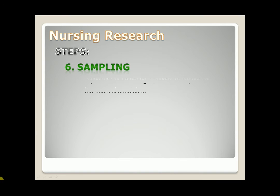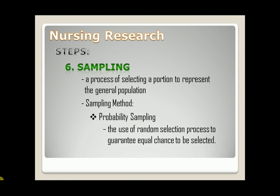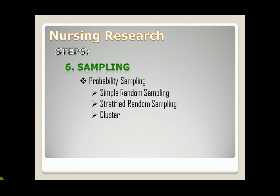Sixth step is sampling. It is a process of selecting a portion to represent the general population. First sampling method: probability sampling — the use of random selection to guarantee equal chance to be selected. Under this: simple random sampling, done by chance like lottery or the fishbowl method. Second, stratified random sampling — according to strata, level, or categories. For example, 100 high school students is the sample size, getting them from first-year to fourth-year level. Lastly, cluster — getting a sample from a large group.